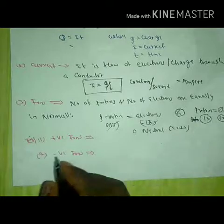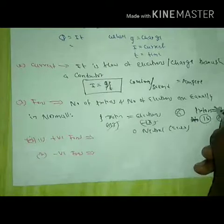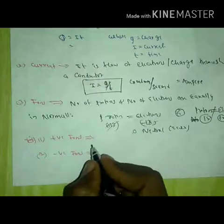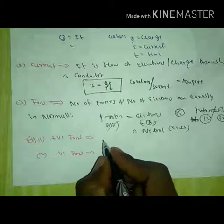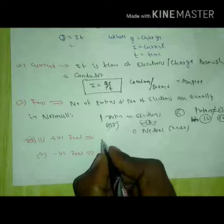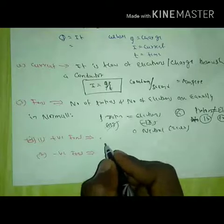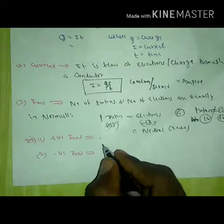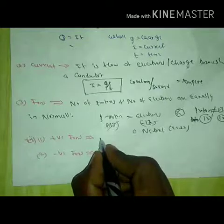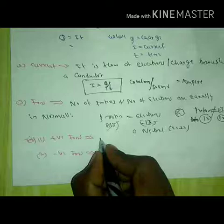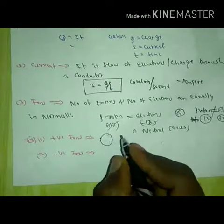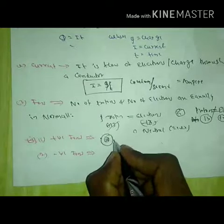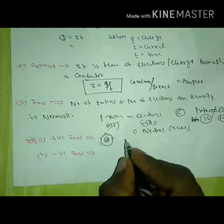When an electron is removed from a neutral atom, it becomes a positive ion. The positive answer — atomic delivery — really protons and electrons. Electrons and the more.